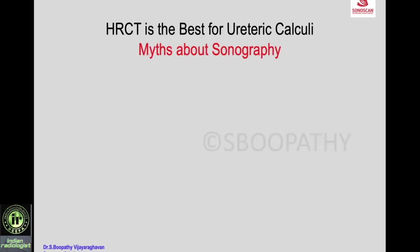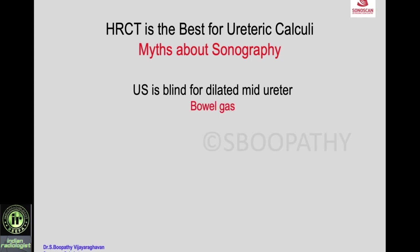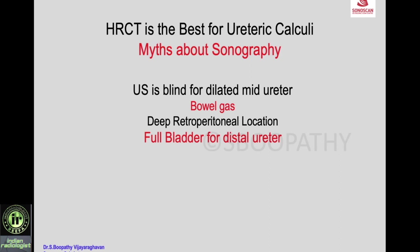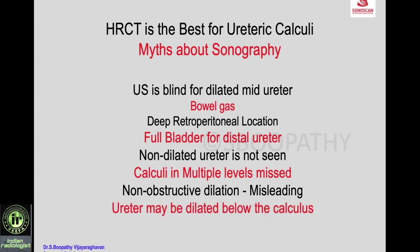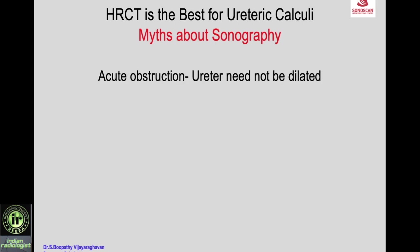It is generally said that HRCT is the best investigation for ureteric calculi because of some myths about sonography. One myth is that ultrasound is blind for the dilated mid ureter because of bowel gas and the deep retroperitoneal location of the ureter — but we know it is at the same level as the appendix, so if the appendix can be seen, the ureter can be seen. You also need a full bladder for the distal ureter. Non-dilated ureter is not seen, and calculi at multiple levels may be missed.